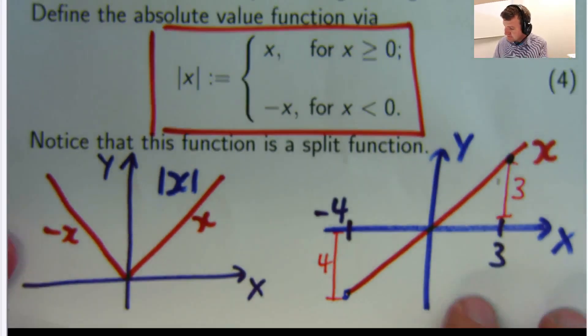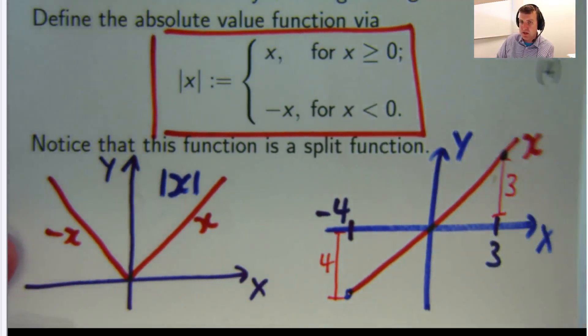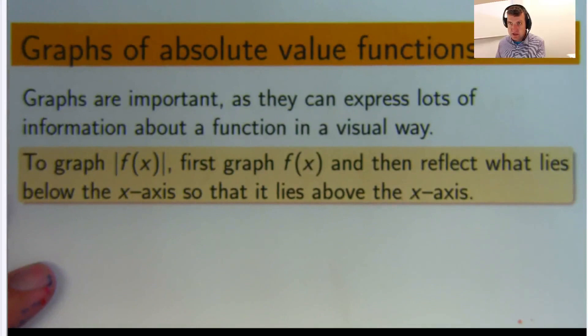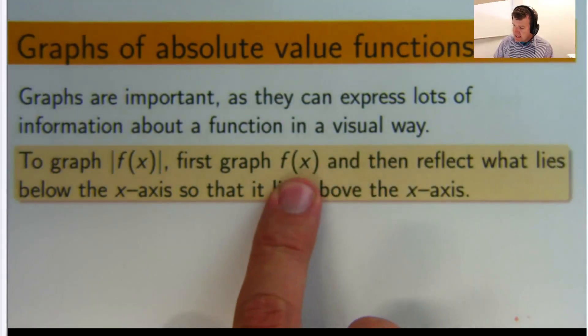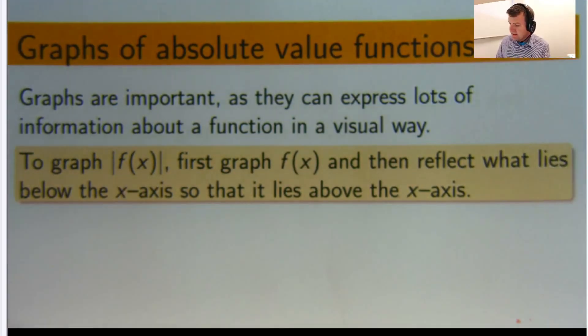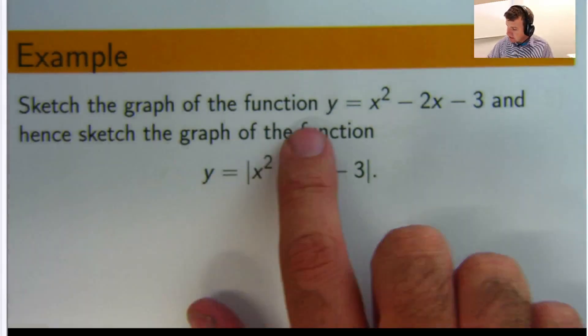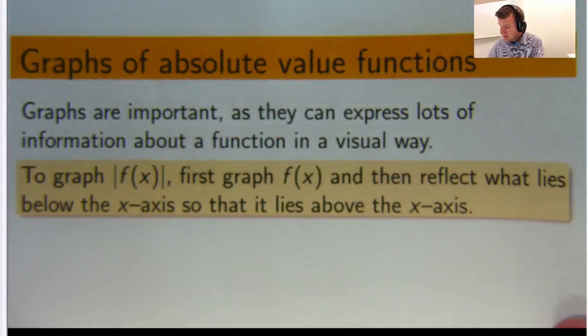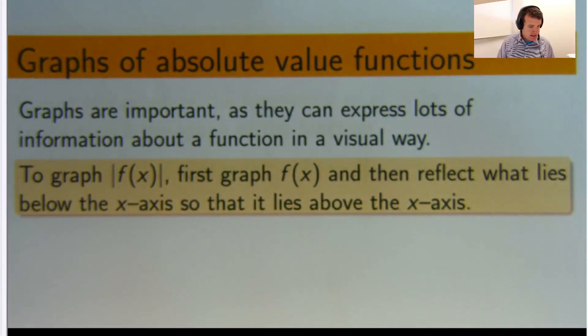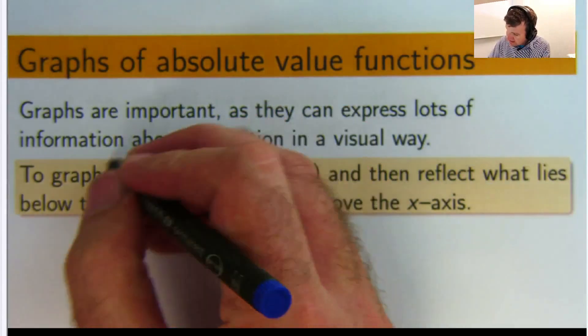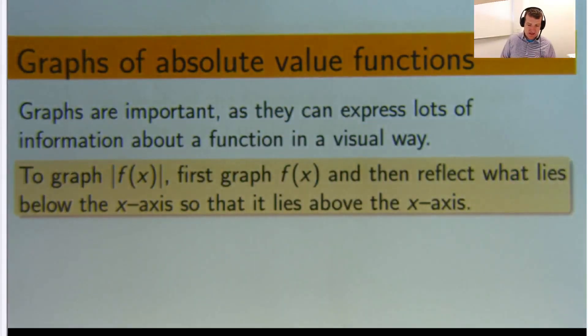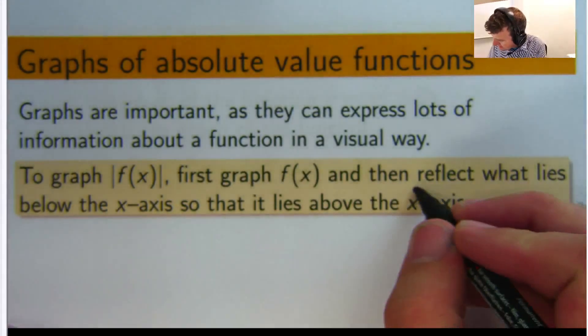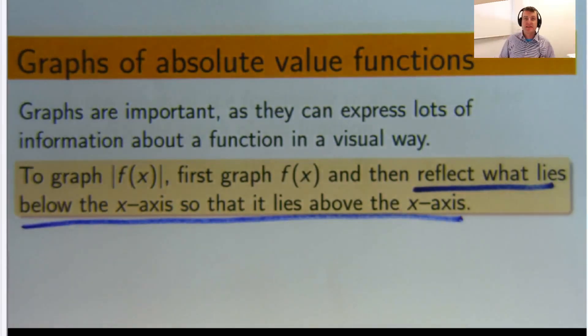Let me show you how we're going to apply these ideas. We're going to look at a question where you're given a function and you're asked to graph the absolute function associated with it. Here's an example: sketch the graph of this function and hence use that information to sketch the graph of this function. Here are some basic tips: first you graph the function without the absolute values, then you reflect what lies below the x-axis so that it lies above the x-axis. Distance can't be negative, so absolute values cannot be negative.